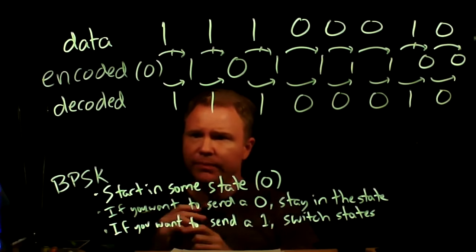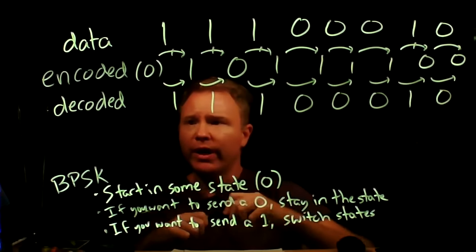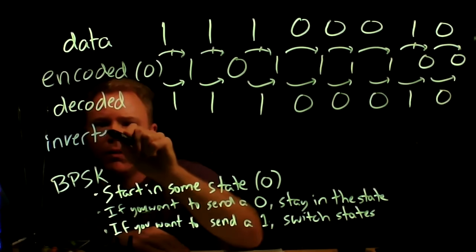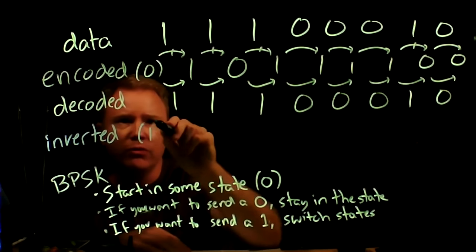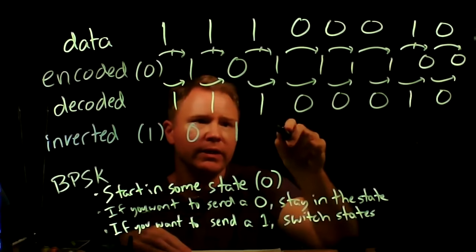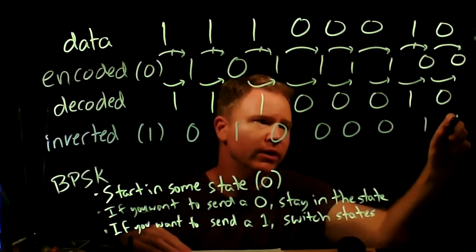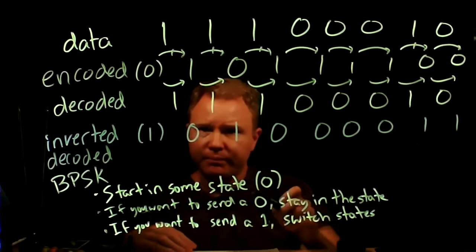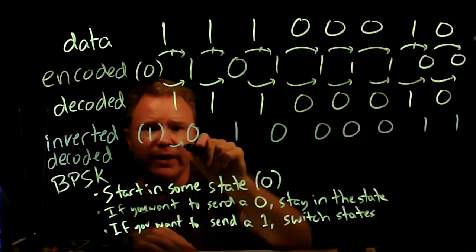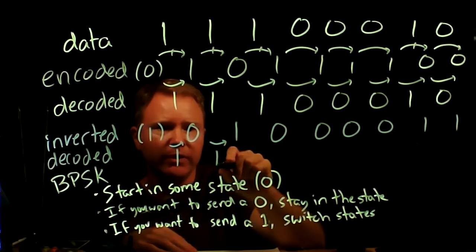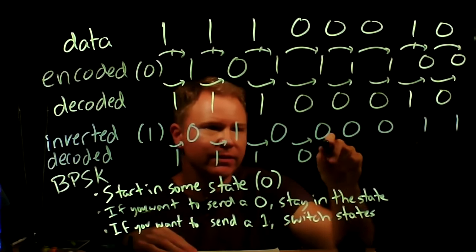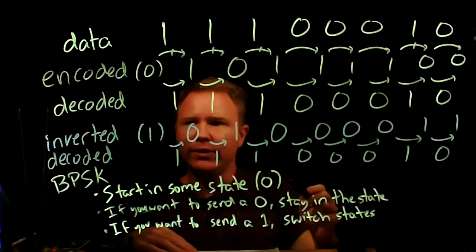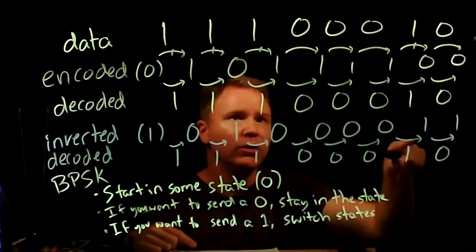Now let's say we locked onto the wrong phase and received an inverted version: 1, 0, 1, 0, 0, 0, 0, 1, 1. Decoding the same way — did the bit flip? Yes. Yes. Yes. No. No. No. Yes. No. You can see that either way — whether I receive the original or the inverted version — I get back the same sequence, which was my input sequence.